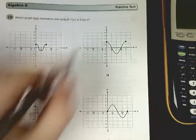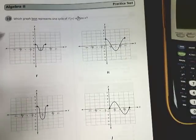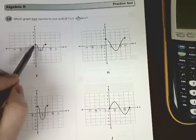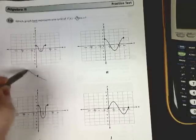If you remember from trig, the first number is the amplitude. If we look at all our choices, we notice that choice F has an amplitude of only 1. It only goes up to 1 and down to negative 1, so it can't be that one.